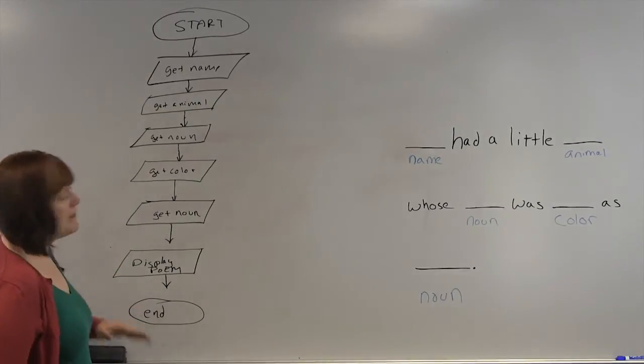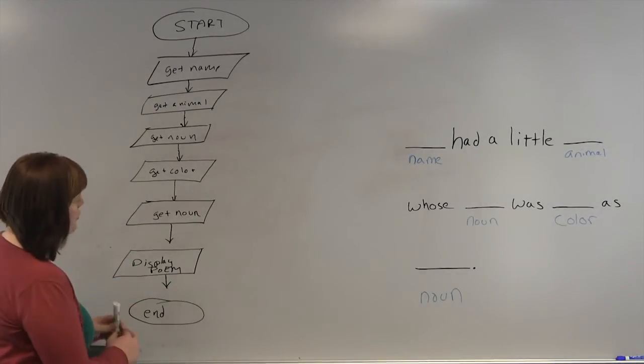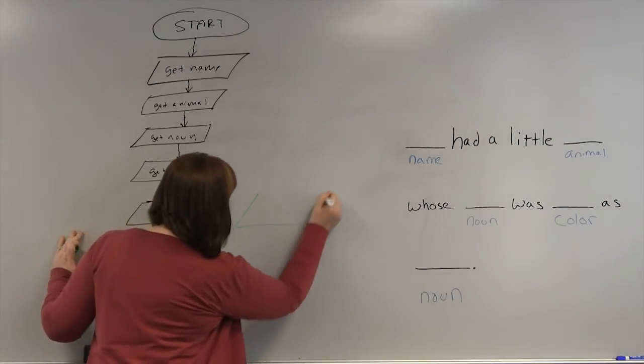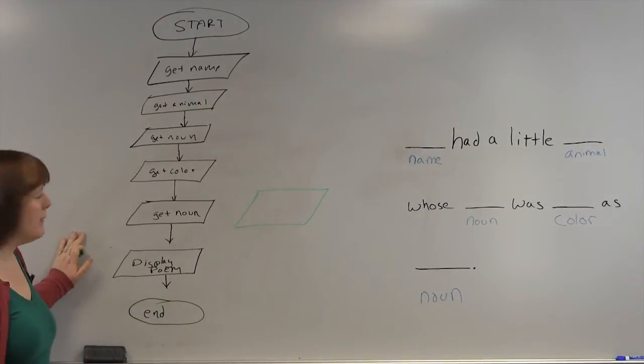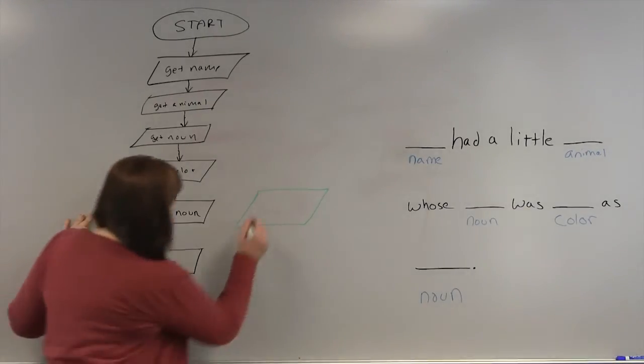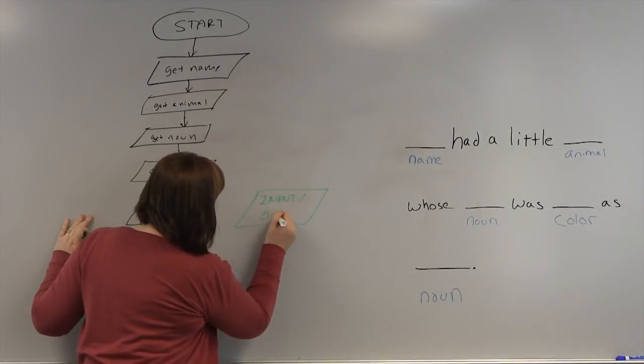You have a few simple shapes. We're just working with two of the shapes right now. This is the input-output shape, and it should be a very neat, nice sort of angled rectangle, parallelogram. And that is input-output for a shape.